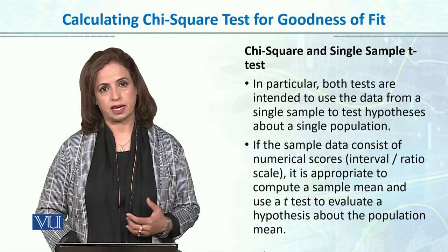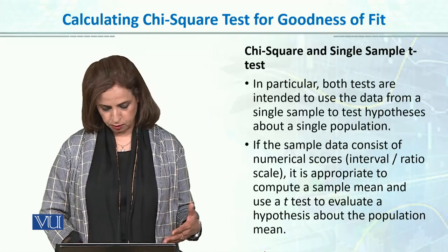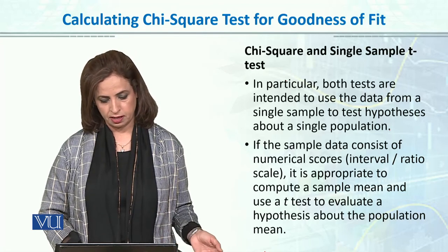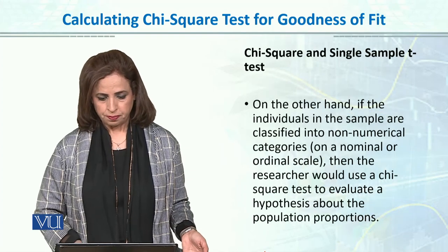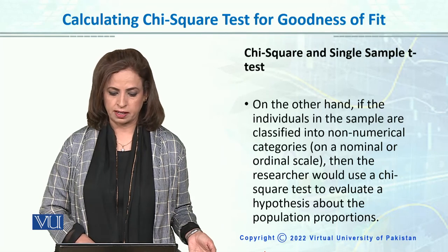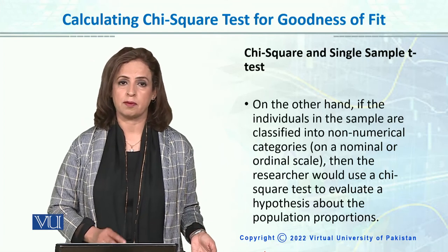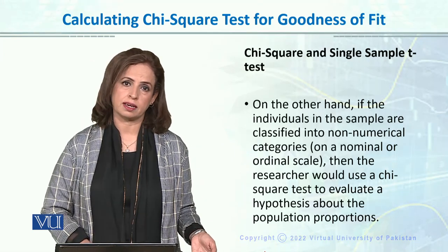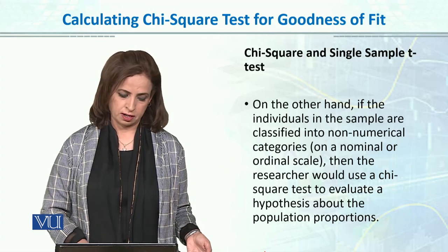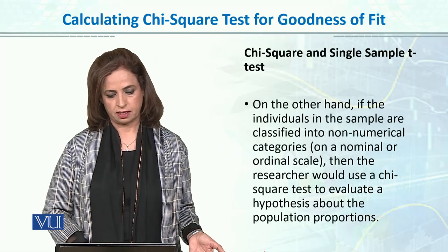The key difference is the scale of data: in the t-test, data is quantitative interval or ratio scaled, whereas in chi-square, data is on a nominal or ordinal scale. When individuals are classified into non-numerical categories (nominal or ordinal), we naturally use chi-square goodness of fit instead of the t-test. So when data is qualitative, chi-square goodness of fit is the appropriate test.